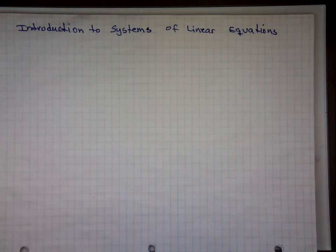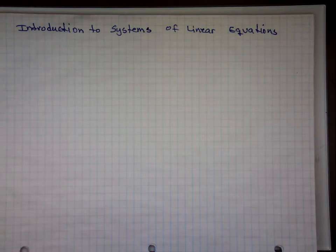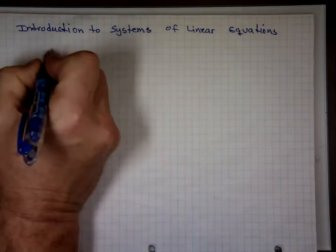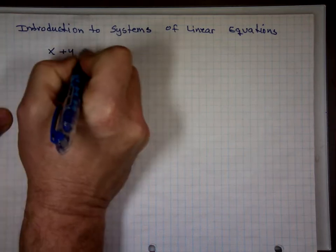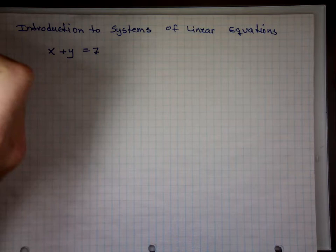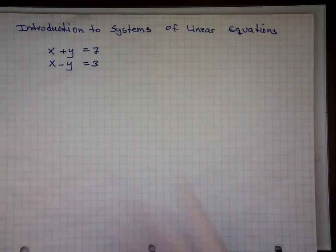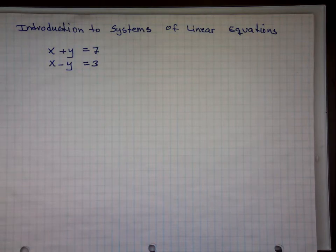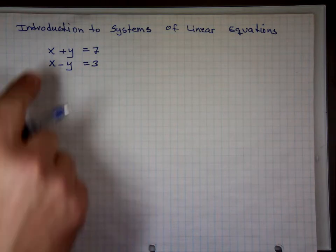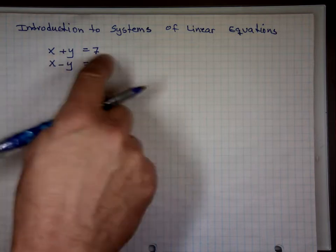Introduction to systems of linear equations. In this section, you're going to be given two equations with two unknowns — basically linear equations, like x plus y equals 7 and x minus y equals 3. The question is: can you find the solution to these equations? Can you find a point that, if you plug in the values for x and y, this equation will be correct, and so is this?